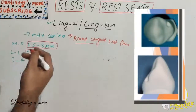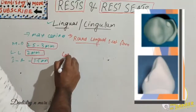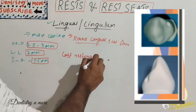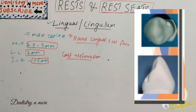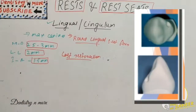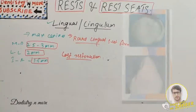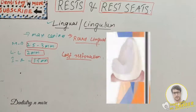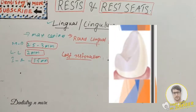For a lingual rest seat on a cast restoration: when a crown is to be placed on an anterior tooth and a rest seat is required, the rest seat should be placed in the wax pattern first. The floor of the rest seat is readily carved to be the most apical portion of the preparation — a saddle-like shape — providing a positive rest seat located favorably in relation to the long axis of the tooth.